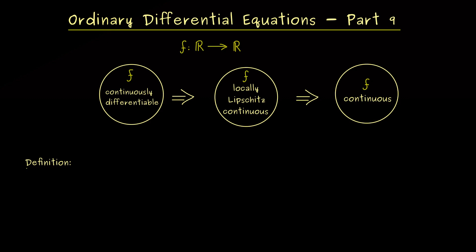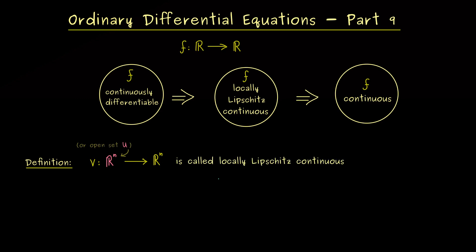Here we have the formal definition. Let's formulate it with the notations we already used in ODEs. We consider a map v from R^n into R^n. Sometimes the domain of definition is smaller than the whole R^n and then we just choose an open set U. However, that does not change the definition at all, so we keep it simple here with the domain chosen as R^n. The function v is called locally Lipschitz continuous if it fulfills a local condition at each point in the domain.